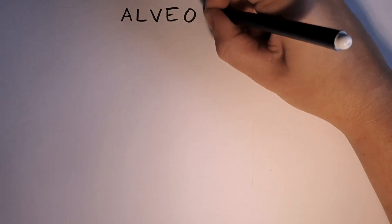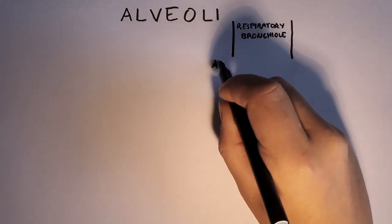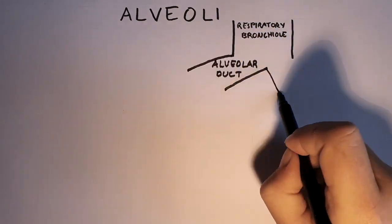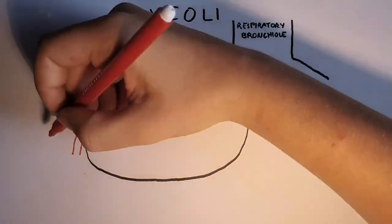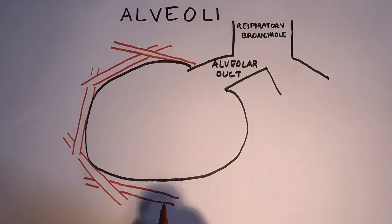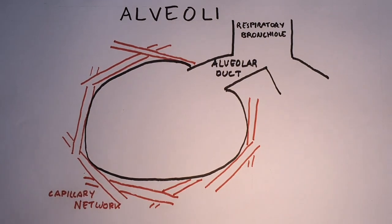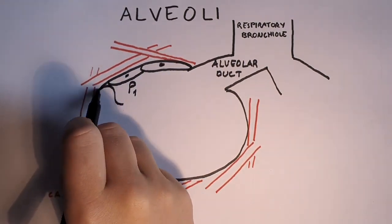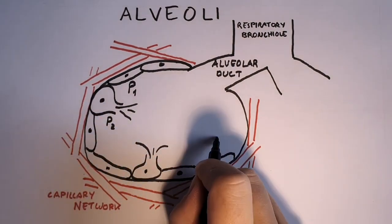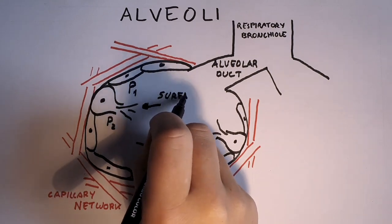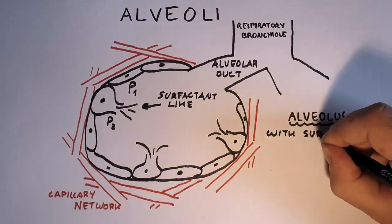Alveoli are very thin light spherical sacs filled with air and surrounded by a capillary network. The respiratory membrane is so thin that the gas exchange occurs only by diffusion. Alveoli are lined by a simple squamous epithelium that is formed by type 1 pneumocytes and by specific cells that appear less flattened, which are called type 2 pneumocytes. Type 2 pneumocytes release a surfactant-like molecule. Once again, the function of the surfactant is to avoid the collapse of the alveoli.